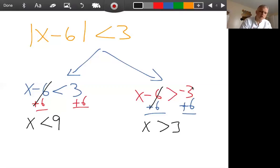All right, now going back to here when it was already isolated, the absolute value was isolated. So am I gonna have an AND or an OR? An AND, because it was less than. Okay, so this is gonna be an AND.